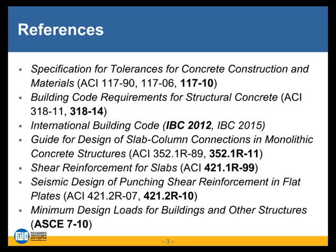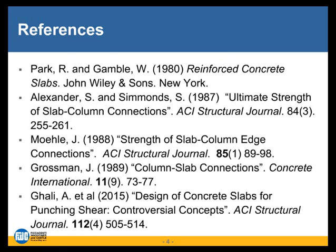ACI 117 — the specification for tolerances on concrete construction materials — is something that as design engineers we often reference for our specifications. Most everyone references ACI 117 to one degree or another. Today we're going to talk primarily about what's in 117.10, referencing back to some earlier versions in passing. ACI 352.1R, 421.1R, and 421.2R are committee reports from ACI that provide better depth on punching shear issues. And of course ASCE 7-10, which is the governing design loads document.